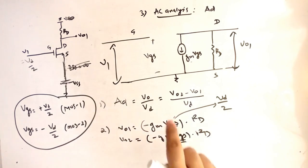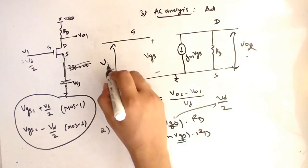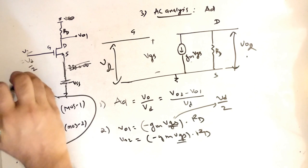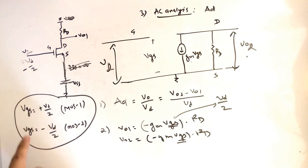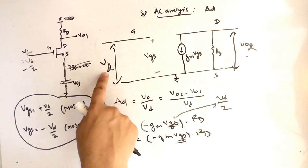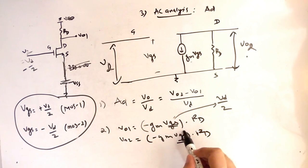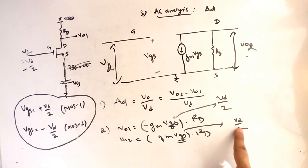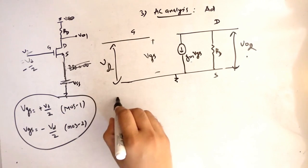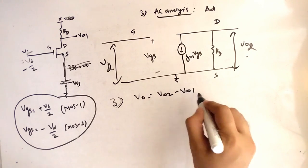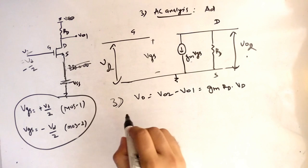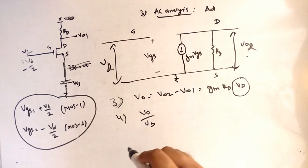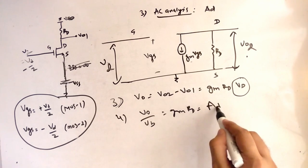For MOSFET2, VGS equals V2, and V2 equals -VD/2. Therefore VGS = -VD/2, and VO2 = -GM·(-VD/2)·RD = +GM·(VD/2)·RD. Now VO = VO2 - VO1, which gives GM·RD·VD. Therefore VO/VD = GM·RD. This is the value of AD, the differential gain.